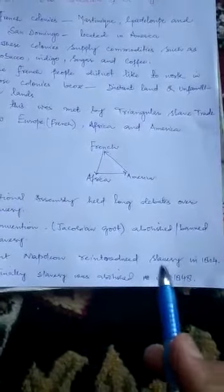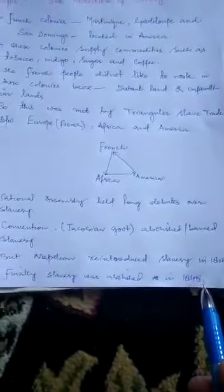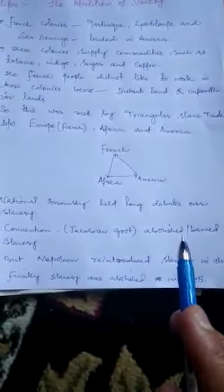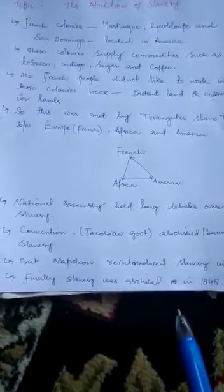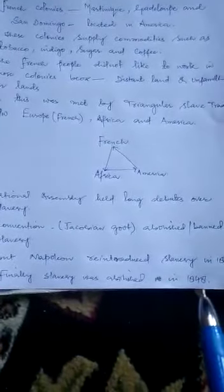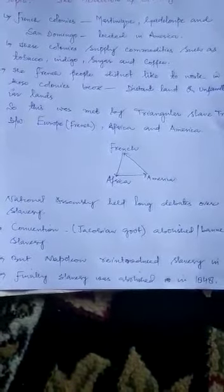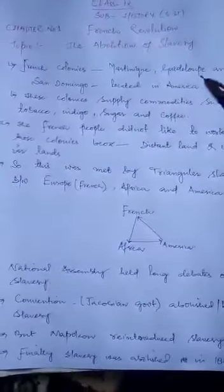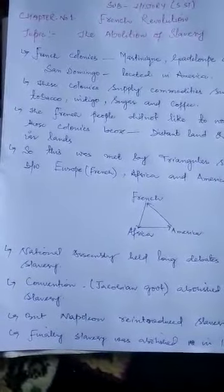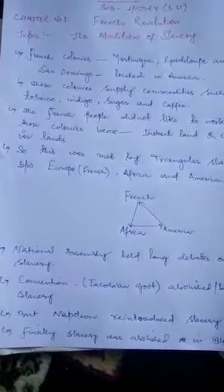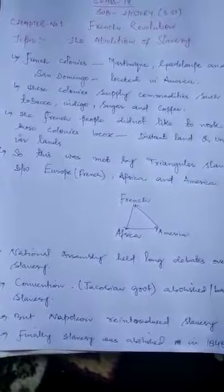Napoleon کی period میں 1804 سے 1848 تک slavery چلی. Finally slavery was abolished in 1848 — France میں finally slavery abolish کی گئی. So this is all about the abolition of slavery. The last important topic of the French Revolution — everyday life — we will discuss in the next video. I hope you have understood. If you have any doubt, please let me know. Thank you.